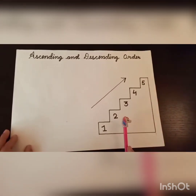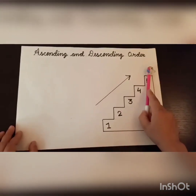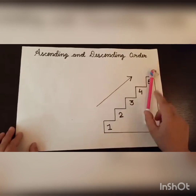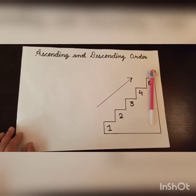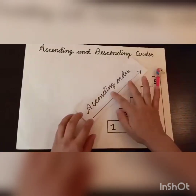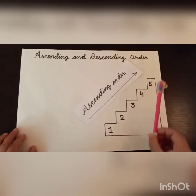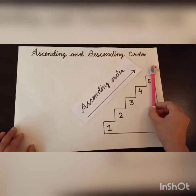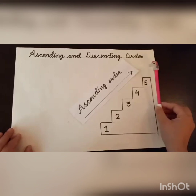Tutu is moving from small number to big number — small to big, low to high. So moving from small to big is called ascending order. Ascending order means to arrange the things or numbers from small to big.